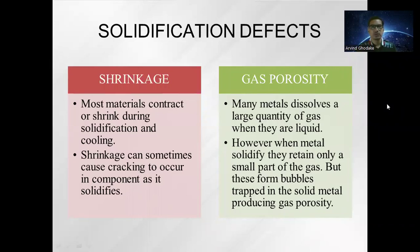Today we will discuss solidification defects. Two types of defects occur during solidification: shrinkage and gas porosity. In shrinkage, most materials contract or shrink during solidification and cooling. Shrinkage can sometimes cause cracking to occur in a component as it solidifies.